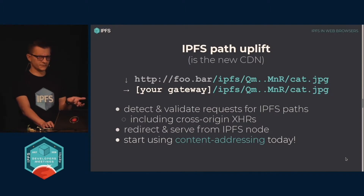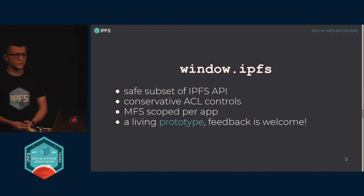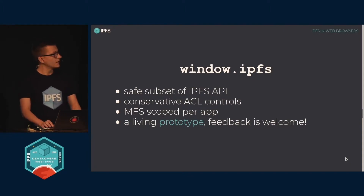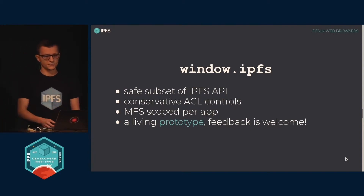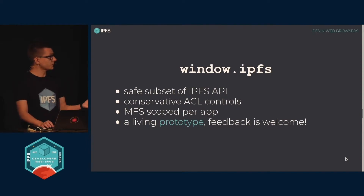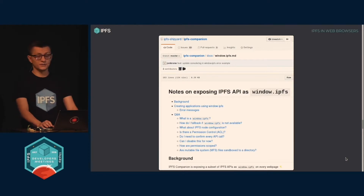In the future, there will be other solutions to uplift those paths — for example, service worker gateways, which were mentioned, and we'll have a deep dive on that today. Another feature is exposing a safe subset of IPFS APIs on every website. We have conservative access controls; those might be annoying at this point, but we want to play it safe. Most APIs can be safely scoped per application so no dialogue is displayed to the user. For example, the mutable file system is scoped per application in a fashion similar to service workers. Generally, it's a living prototype — feedback is welcome. Go to the IPFS Companion repository; there's a doc subdirectory with notes on this new interface, Q&A, code samples, and more.